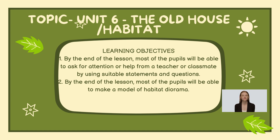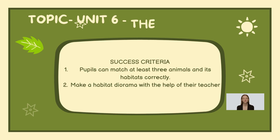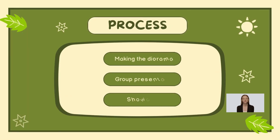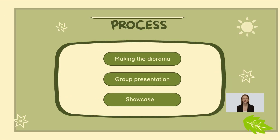2. By the end of the lesson, most of the pupils will be able to make a model of habitat diorama. Success criteria: pupils can match at least three animals and their habitats correctly. Make a habitat diorama with the help of their teacher. These are the steps for this lesson.